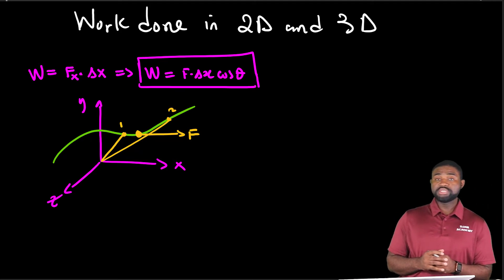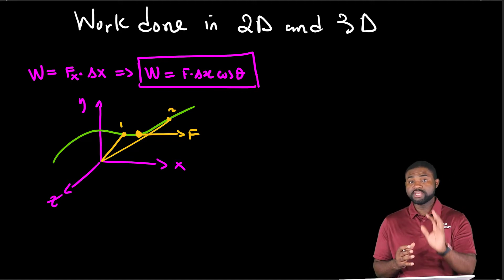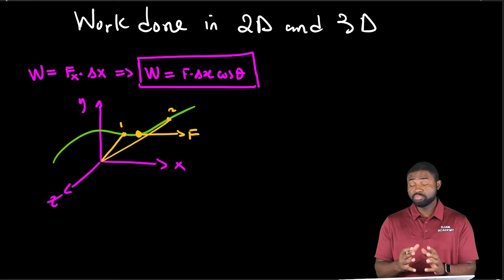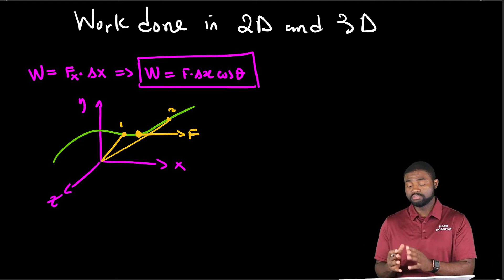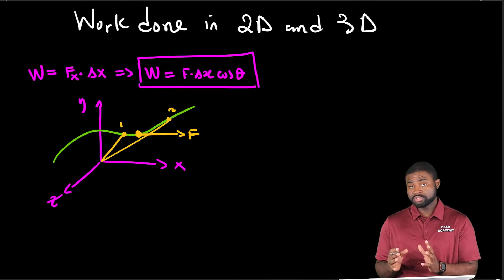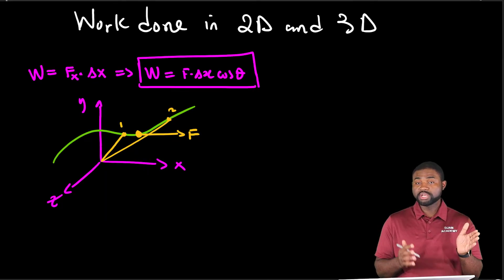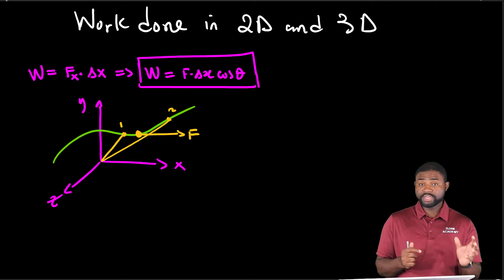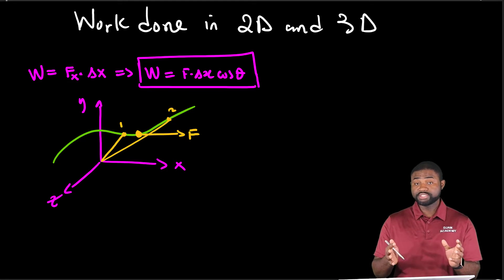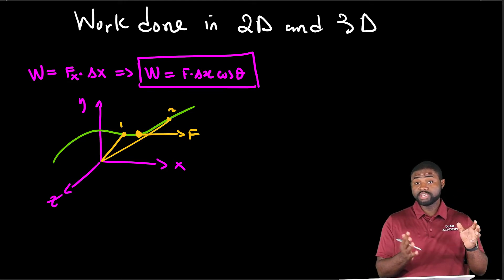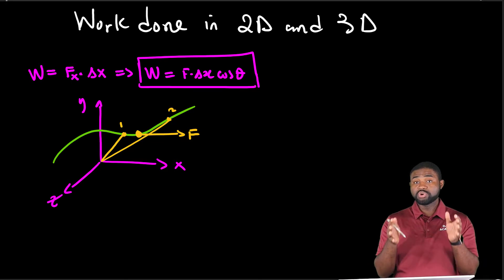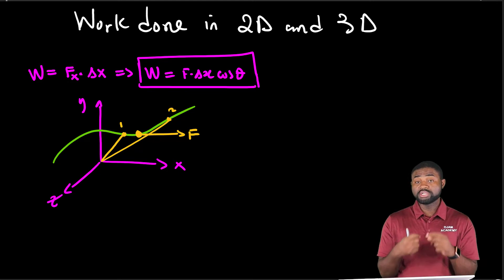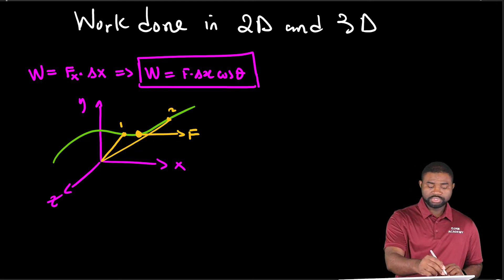The question is: what is a dot product? I'm going to give you the definition, then the geometric interpretation. When you multiply a vector by a scalar you get a vector, but when you multiply a vector by another vector you can either get a vector or a scalar. When you multiply two vectors and the product is a scalar, we call that a dot product.